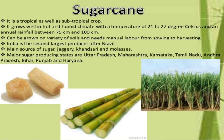Sugarcane is a tropical as well as subtropical crop. It grows well in hot and humid climate at a temperature of 21 to 27 degrees Celsius and an annual rainfall between 75 cm and 100 cm. It can be grown on a variety of soils and needs manual labour from sowing to harvesting. India is the second largest producer of sugarcane after Brazil. It is the main source of sugar, jaggery, khandsari and molasses.